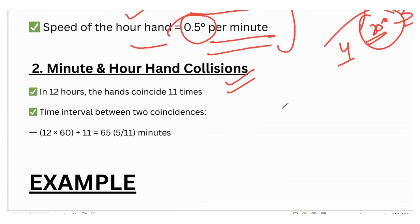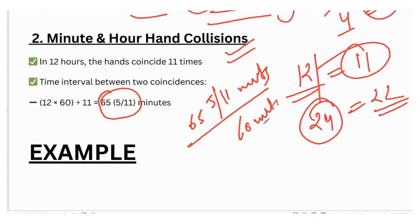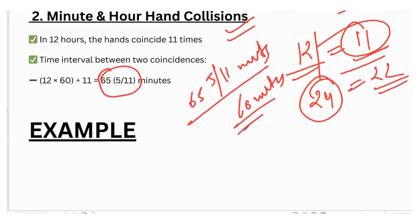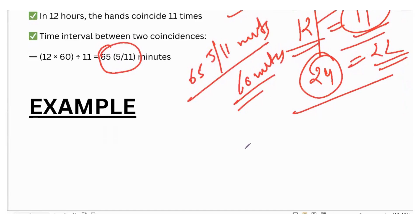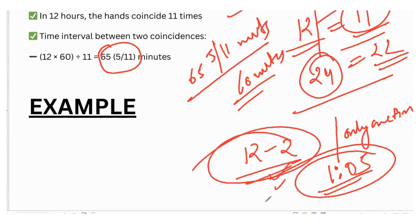The second concept: the minute and hour hand coincide. How many times? In 12 hours they coincide 11 times; in 24 hours they coincide 22 times. Why? Because they coincide after 65/11 minutes, not 60 minutes. That's why they cannot coincide 12 times in 12 hours. The exception is between 12 to 2 — the clock coincides only one time, at 5 minutes past 1. You need to cram this.